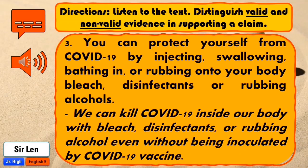You can protect yourself from COVID-19 by injecting, swallowing, bathing in, or rubbing onto your body blood. We can kill COVID-19 inside our body with bleach, disinfectants, or rubbing alcohol, even without being inoculated by a COVID-19 vaccine.